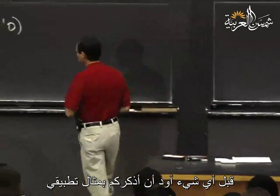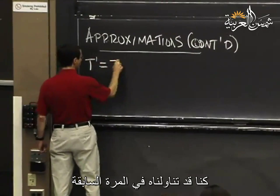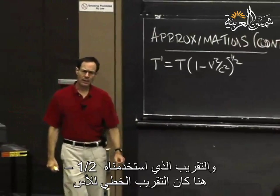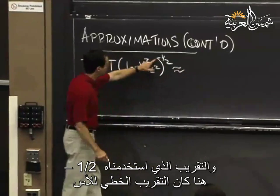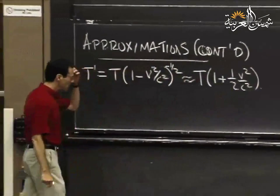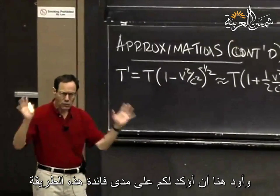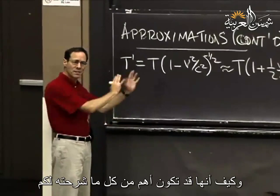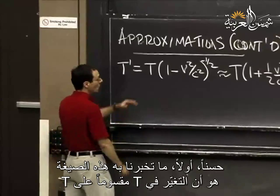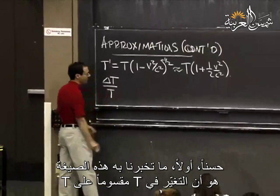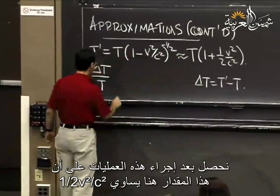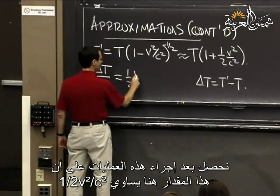I want to remind you of the actual applied example from last time — something from special relativity. The approximation we used was the linear approximation with the minus one-half power. That comes out to be t times 1 plus one-half v squared over c squared. The change in t divided by t is approximately equal to one-half v squared over c squared.